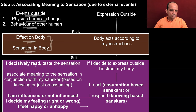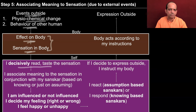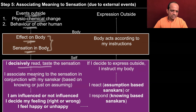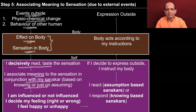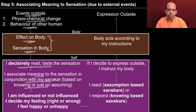Now here you are, and you decisively read and take in the sensation. So you take a decision that yes, this is something important for me. For example, the breeze is blowing and you are not paying attention, but if you start feeling cold, then you start paying attention. You decisively read the sensation and then you associate meaning to it in conjunction with your sanskar, which is based either on knowing or just on assuming. Every time you read the sensation, you associate some meaning to it, by which you decide what to do next. That meaning could be based either on your right understanding — that is, knowing — or just on some assumptions, something you have come to assume without knowing.